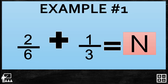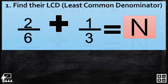Here is example number 1. I have 2 over 6 plus 1 over 3 equals N. We're going to find out what is the value of N, using the steps on how to add or subtract dissimilar fractions.